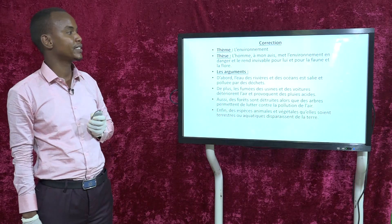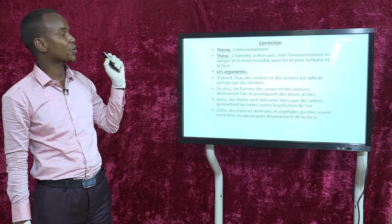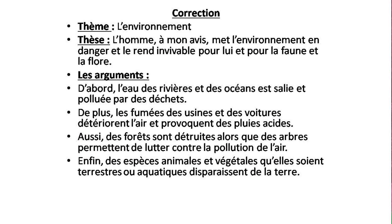Correction : le thème dont on parle dans le texte est l'environnement. Concernant la thèse : « L'homme, à mon avis, met l'environnement en danger et le rend invivable pour lui et pour la faune et la flore. » Les arguments : premier argument — « D'abord, l'eau des rivières et des océans est salie et polluée par des déchets. » Deuxième argument — « De plus, les fumées des usines et des voitures détériorent l'air et provoquent des pluies acides. » Troisième argument — « Aussi, les forêts sont détruites alors que les arbres permettent de lutter contre la pollution de l'air. » Dernier argument — « Enfin, des espèces animales et végétales, qu'elles soient terrestres ou aquatiques, disparaissent de la terre. »